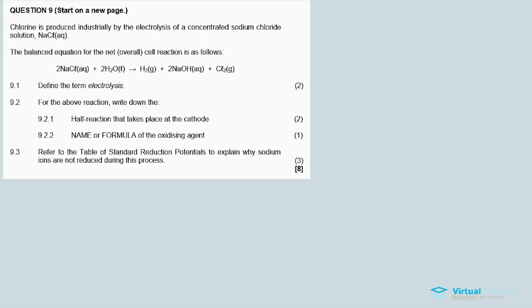Right, now this is a question on electrolytic cells for the November 2019 question paper. In the description below, I will link to this question paper. Now, learn about it. Chlorine is produced industrially by the electrolysis of a concentrated sodium chloride. Salt, right? Table salt.